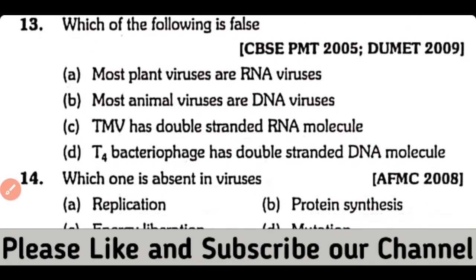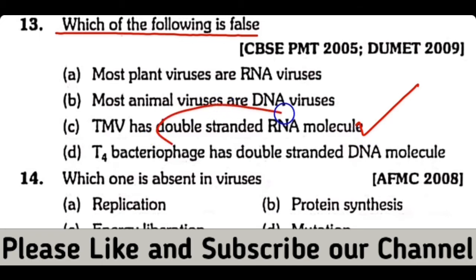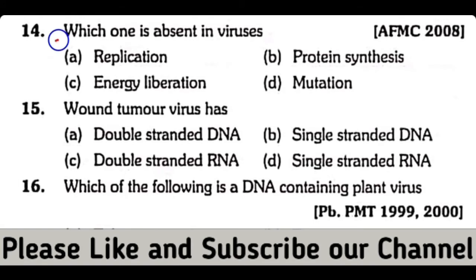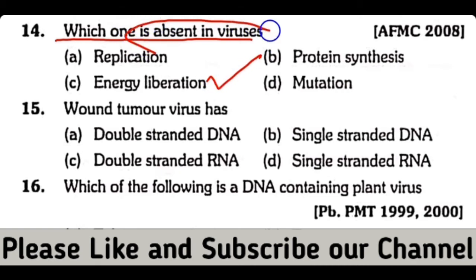Question number 13. Which of the following is false? Most plant viruses are RNA viruses. Most animal viruses are DNA viruses. TMV has double-stranded RNA molecule. T4 bacteriophage has double-stranded DNA molecule. So the correct answer is option C. Question number 14. Which one is absent in viruses? Replication, protein synthesis, energy liberation, or mutation. So the correct answer is option C. Energy liberation is absent in case of viruses.